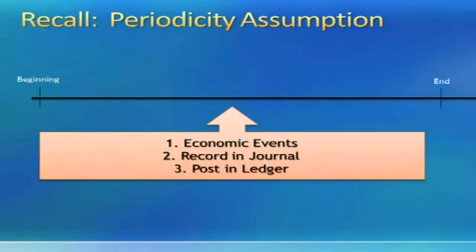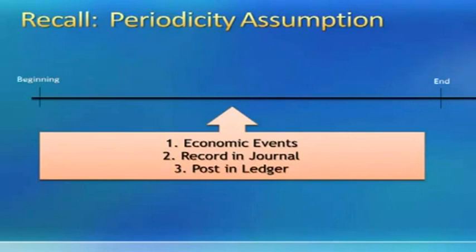For example, the beginning could be the beginning of the year and the end could be the end of the year. Throughout that time period, economic events are occurring — they're being recorded in the journal and posted to the ledger. So all the economic events occurring during this time period are captured by the accounting system by recording them in the journal and posting them in the ledger.